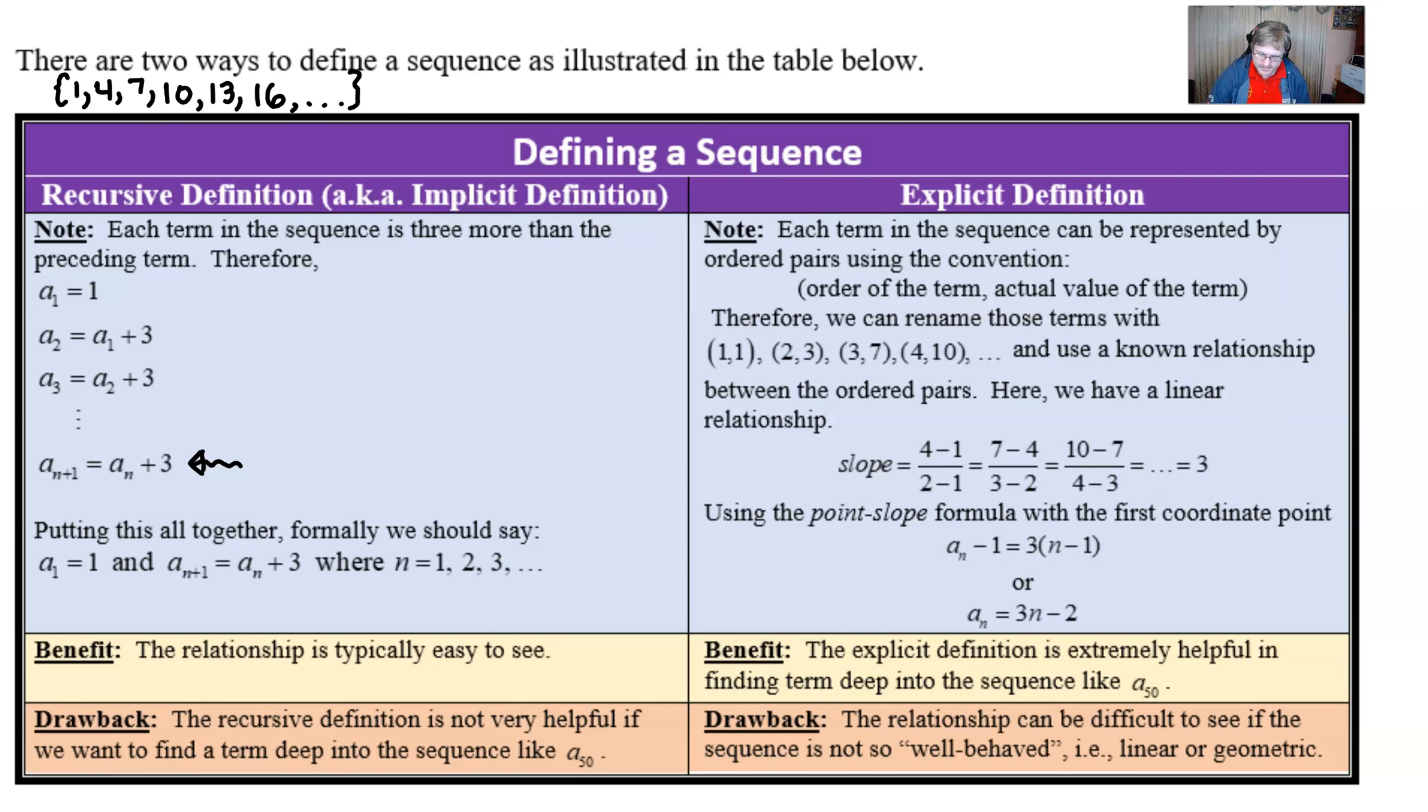Now, if you put this all together very formally, you can write this. And that would definitely convey this recursive definition. You wouldn't necessarily have to include this part I'm highlighting in green. And the reason is because it's typically understood that you're going to use counting numbers of n equal 1, 2, and 3.